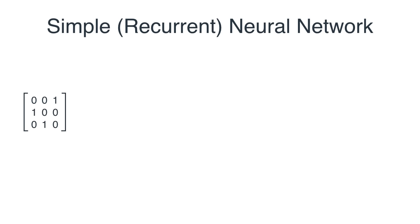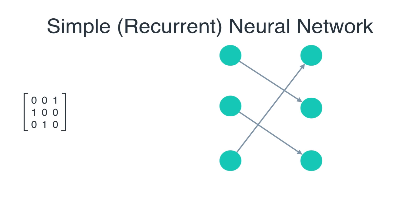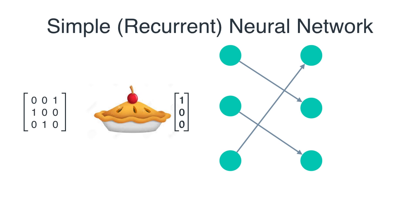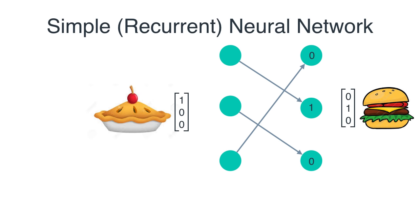So this neural network is simply a linear map that takes apple pie and maps it to the burger, the burger maps to the chicken, and the chicken maps back to the apple pie. If you like to see neural networks as a diagram with nodes and edges rather than as a matrix, this is how it looks. You can verify: put in the burger vector, you get the chicken; put in the chicken, you get back the apple pie.